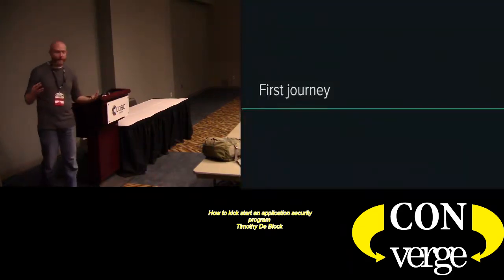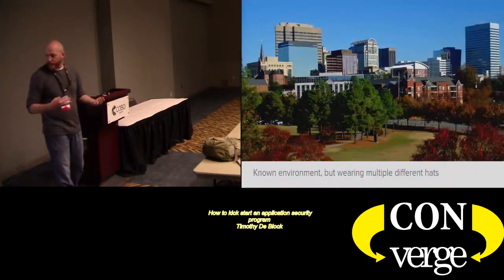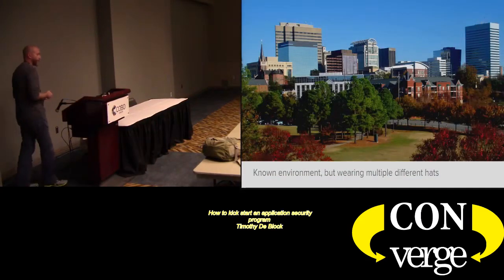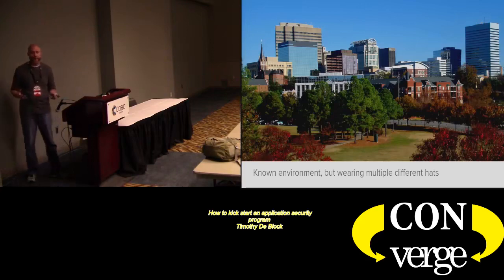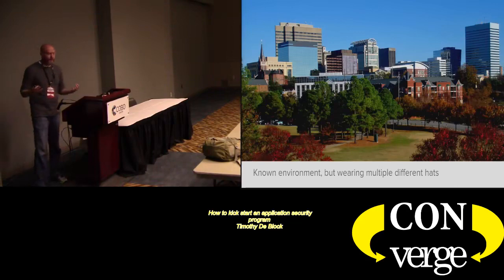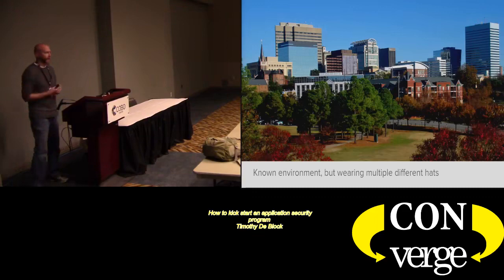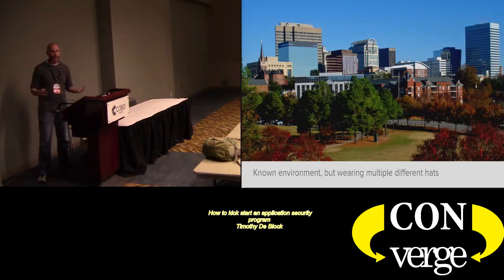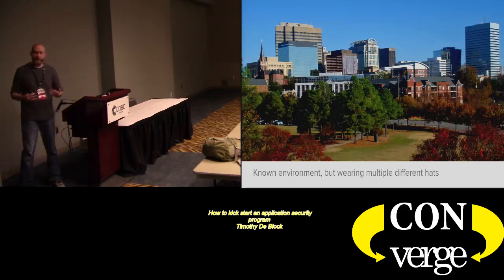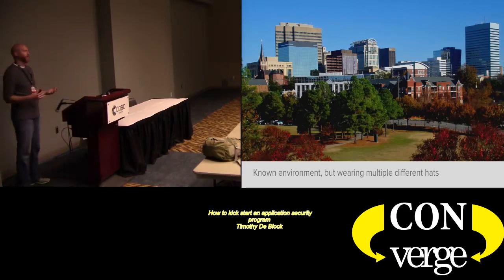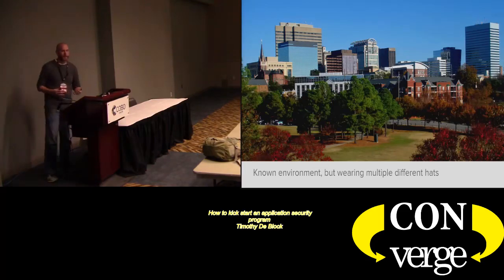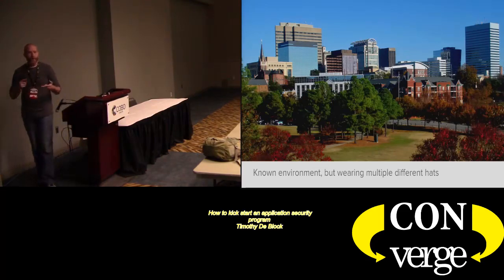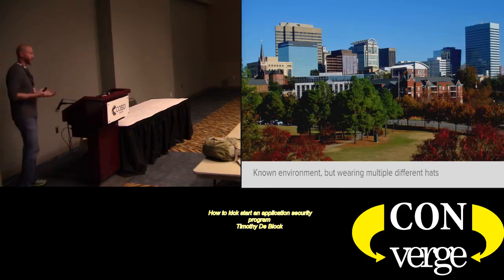We'll go through two journeys. My first journey starts in Columbia, South Carolina, where I'm working on a security team of about three people with a development team of about 10 to 20 people. The advantage is this is a known environment — this is where I got the 'We Need an AppSec Program' moment. I'd been there for a year and a half, so I'm not starting from zero. The disadvantage is that I'm wearing multiple hats: maintaining 15 different security appliances, antivirus, email filter, web filter — so I have to be really practical with this program.